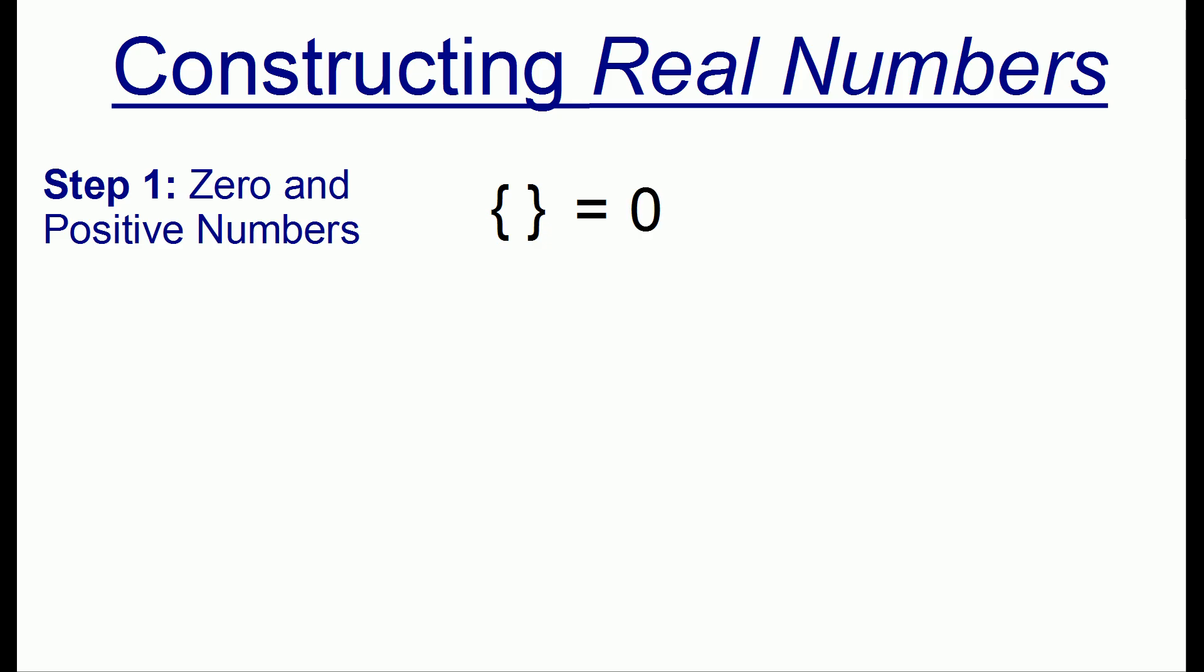And we're going to label this set as the number 0. Now that we have the number 0, we can define a new number as being equal to the set that contains the object 0. And we're going to say that this is the number 1. We're going to continue the process and put a set that contains the number 1 inside of it and call it 2.